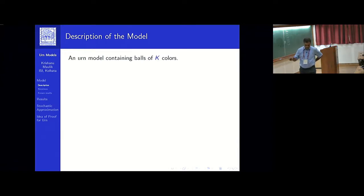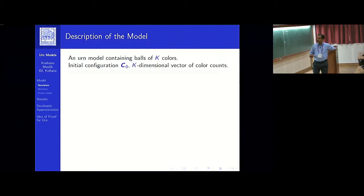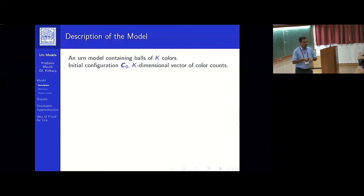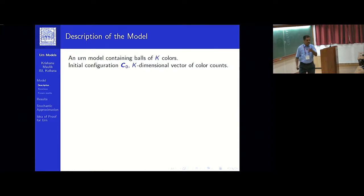I'll point out along the way where our approach gets into difficulties in extending to an arbitrary color set — we are still working on it. So to move on, the main object of interest is the configuration vector. We start with the initial configuration C₀, a k-dimensional vector where each coordinate is the amount of each color present in the urn. I'll be avoiding the traditional urn-and-ball configuration because the amount of color need not be integer-valued.